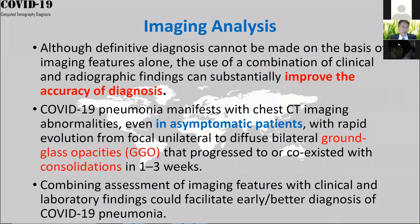Now back to COVID-19. Imaging analysis cannot give a definitive diagnosis — the standard approach is RT-PCR. But the combination of clinical and radiographic findings can improve diagnostic accuracy. RT-PCR can only tell you positive or negative; it doesn't tell you how bad the disease is or where the lesions are inside your lung.